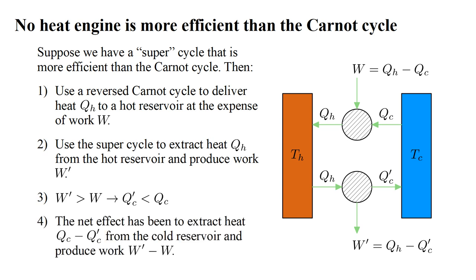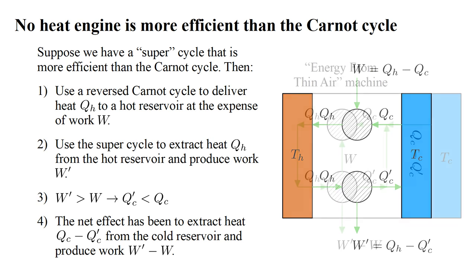The net effect of this entire process has been to extract heat Q cold minus Q cold prime from the cold reservoir, and produce work W prime minus W. We can get rid of the hot reservoir and simply direct the heat output of the reverse Carnot cycle into the super cycle. The heat output by the super cycle can be directed to the input of the reverse Carnot cycle, leaving only the difference Q cold minus Q cold prime to be extracted from the cold reservoir. And, the work W required for the reverse Carnot cycle can be taken from the greater work W prime output by the super cycle, leaving W prime minus W as the net useful work generated by the process.